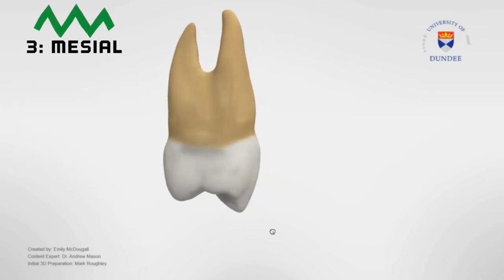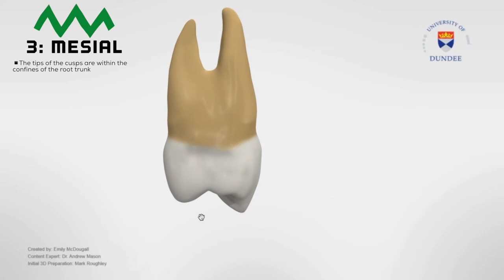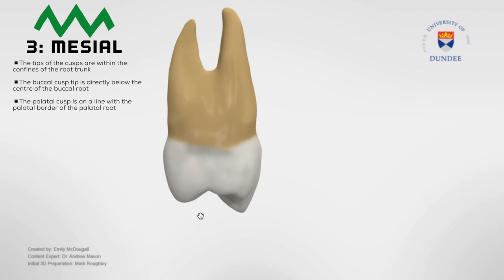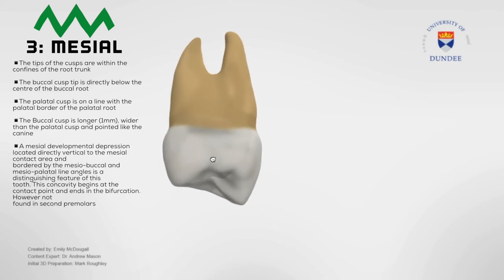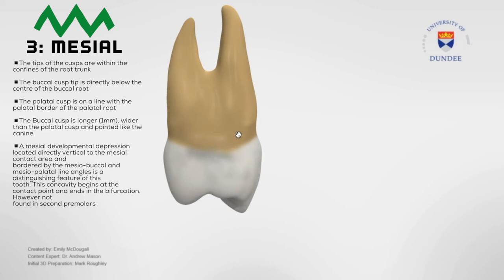Looking at the mesial view, from this aspect we can observe that the tips of the cusps are within the confines of the root trunk. What this means is that if you drew a line either side of the roots, the cusp tips would lie in between those lines. The buccal cusp tip is directly below the center of the buccal root, whilst the palatal cusp is unaligned with the palatal border of the palatal root. The buccal cusp is also longer and wider than the palatal cusp, and pointed like the canine. Most importantly, a mesial developmental depression is located directly vertical to the mesial contact area, bordered by the mesial buccal and the mesial palatal line angles, and is a distinguishing feature of this tooth.